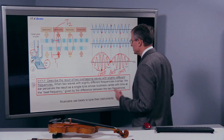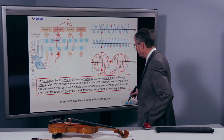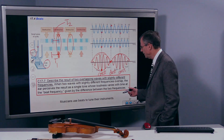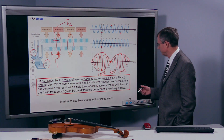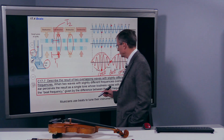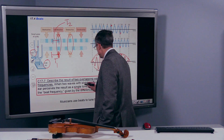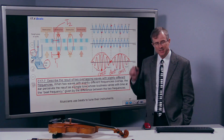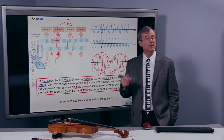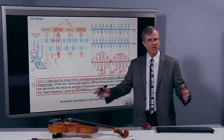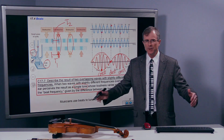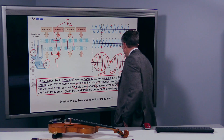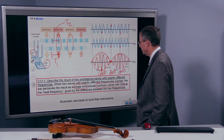So what are beats? They describe the result of two overlapping waves of slightly different frequencies. When two waves of slightly different frequencies overlap, the ear perceives the result as a single tone — not two different tuning forks at the same time. It's going to sound like one tuning fork whose loudness is changing with time, not its frequency.